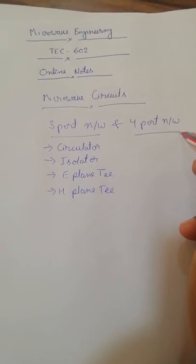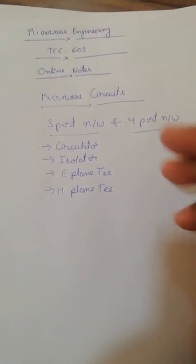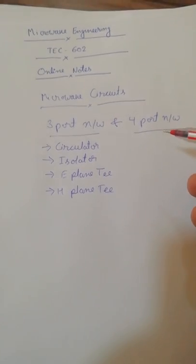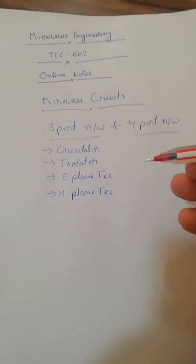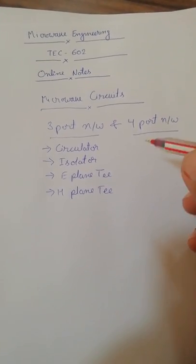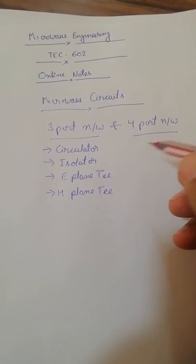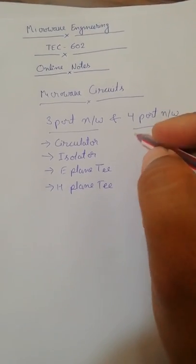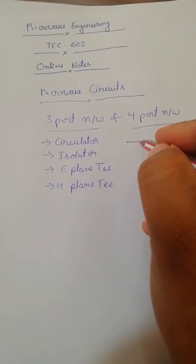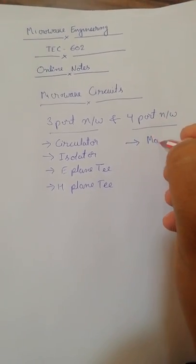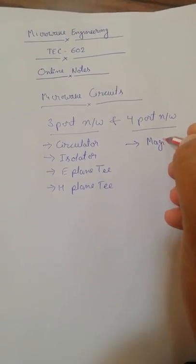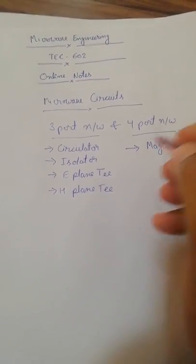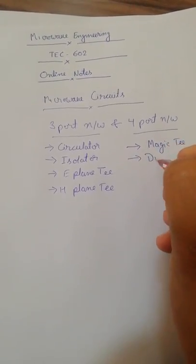There are other three-port and four-port networks also, but I'm covering those which are important for our syllabus. For four-port networks, the most important things are Magic T and directional couplers.